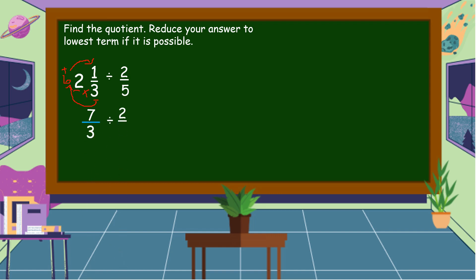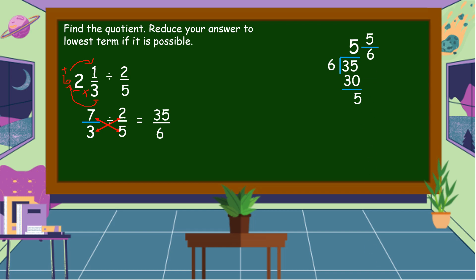Tapos, just bring down two-fifths. We're going to have cross multiplication. Seven times five is equal to thirty-five. Three times two is equal to six. Ang thirty-five over six ay improper fraction because the numerator is bigger than the denominator. So, we're going to divide the numerator by the denominator. Thirty-five divided by six is equal to five. Five times six is equal to thirty. Thirty-five minus thirty is equal to five. Itong five na remainder, gagawin natin numerator. Ang six na divisor ay gagawin natin denominator. So, thirty-five over six or five and five-sixths. And this is our final answer.